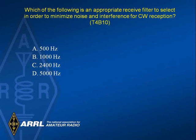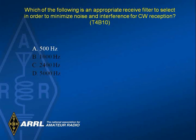Which of the following is an appropriate receiver filter to select in order to minimize noise and interference for CW reception? Answer A: 500 Hz.